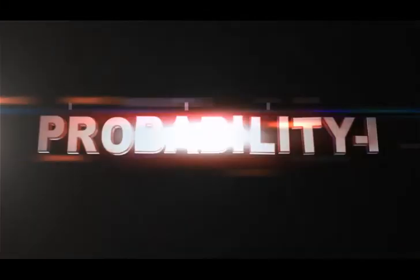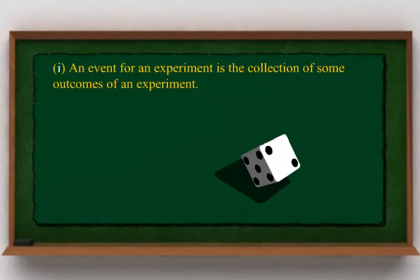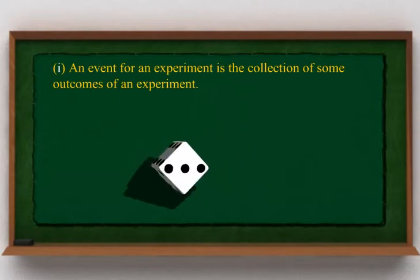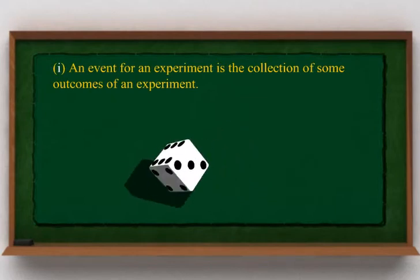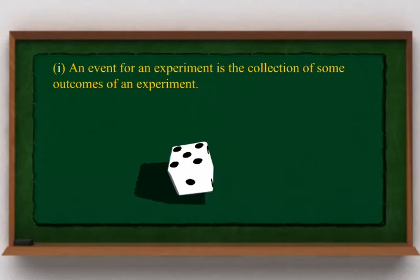This module explains the basic idea of Probability 1. An event for an experiment is a collection of some outcomes of an experiment.